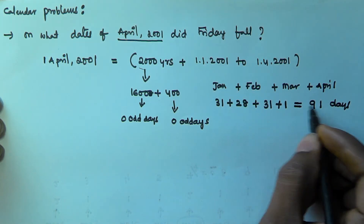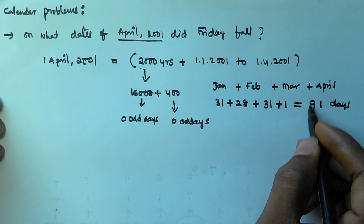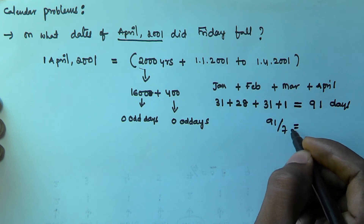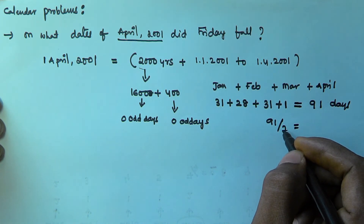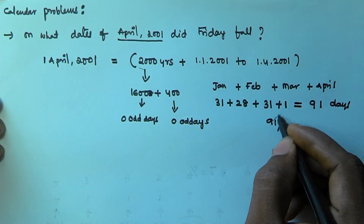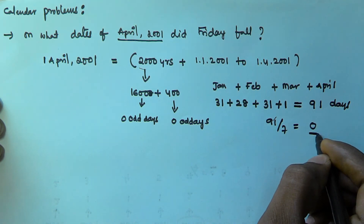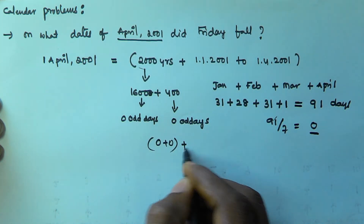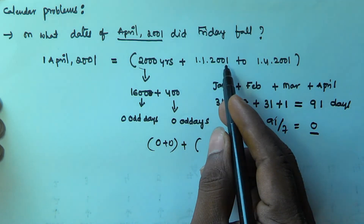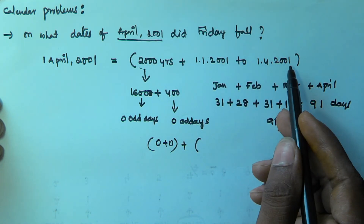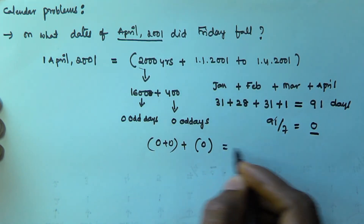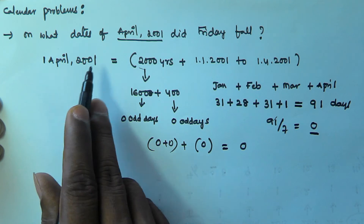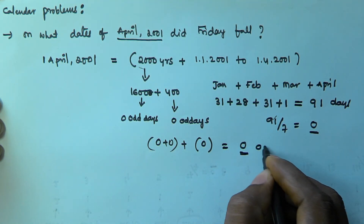We have to find the odd days in 91 days. To do that, we divide by 7 and take the remainder. 91 divided by 7 gives 13, with a remainder of 0. So 2000 years gives 0 odd days, and January 1st to April 1st 2001 also gives 0 odd days. Total: 0 odd days.